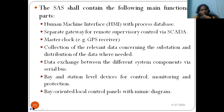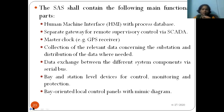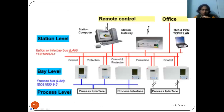The SAS consists of the main functional parts: the Human Machine Interface at the station level, a gateway for the SCADA system, a modem/master synchronized clock which is the GPS receiver, and data collected via the substation. Data exchange between different components is facilitated by a serial bus. All bay level and station level control and monitoring aspects are depicted in a control panel with a mimic diagram, so as soon as you enter the substation you can see the mimic diagram of the entire substation.